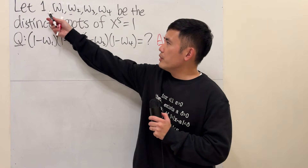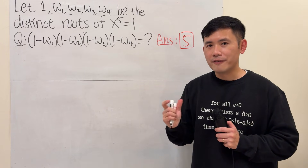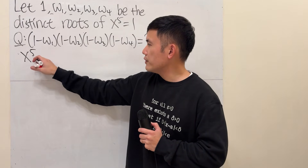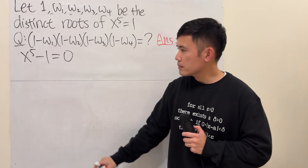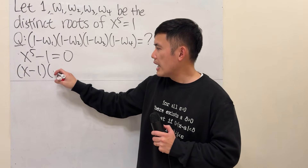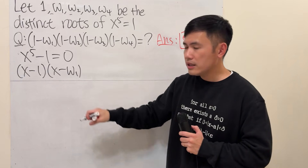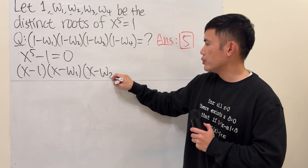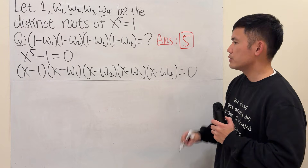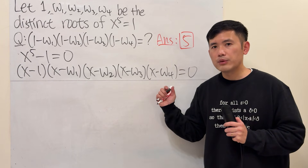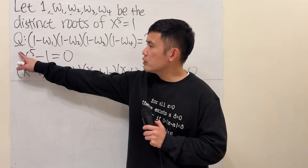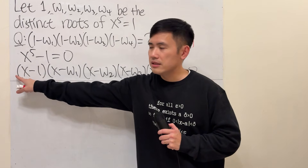We have the equation x to the 5th power equals 1, and the good thing is that we know all the roots. That means we can write it in factored form. First, make one side equal to 0: x to the 5th power minus 1 equals 0. In factored form, this becomes (x minus 1) times (x minus omega 1) times (x minus omega 2) times (x minus omega 3) times (x minus omega 4) equals 0. The coefficient of x to the 5th power is 1, so no leading factor is needed.